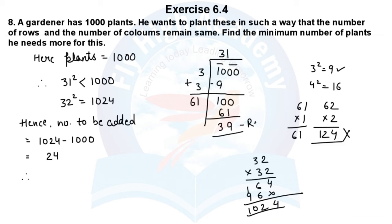Therefore, if I add 24 to 1000, then the number of rows and number of columns will be equal. Hence, the gardener required 24 more plants.